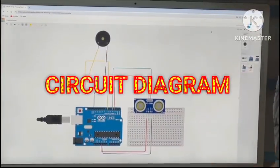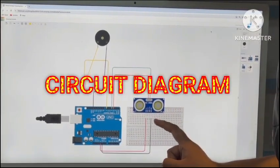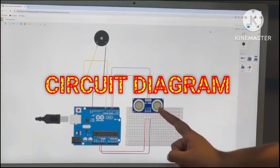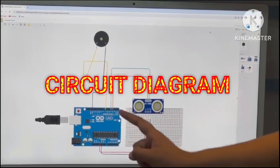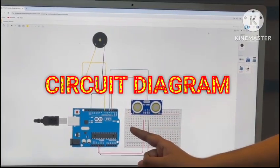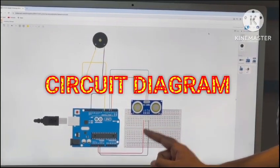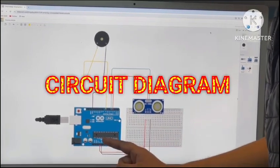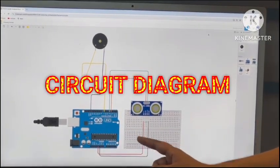Let's start with the circuit diagram. The ground of the ultrasonic sensor is connected with the ground of the Arduino UNO board. The positive VCC is connected to the 5V of the Arduino UNO board.